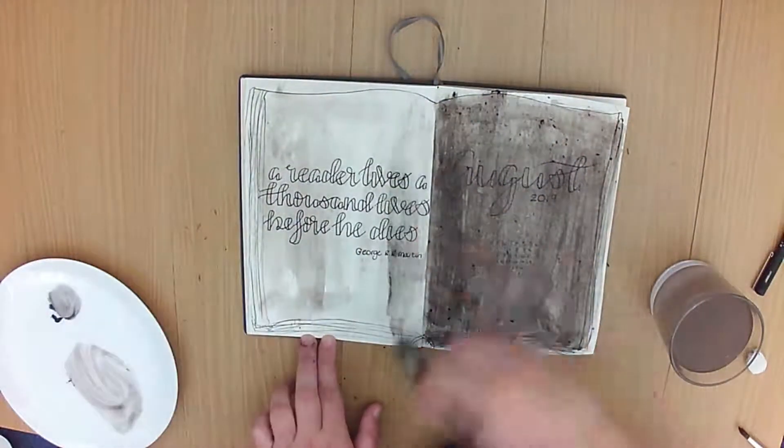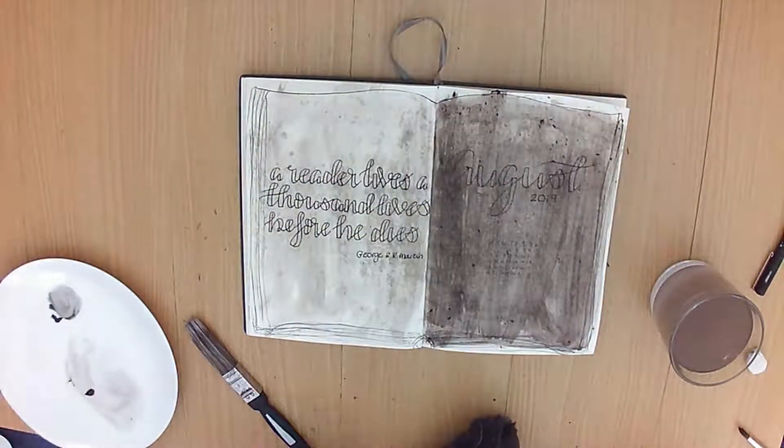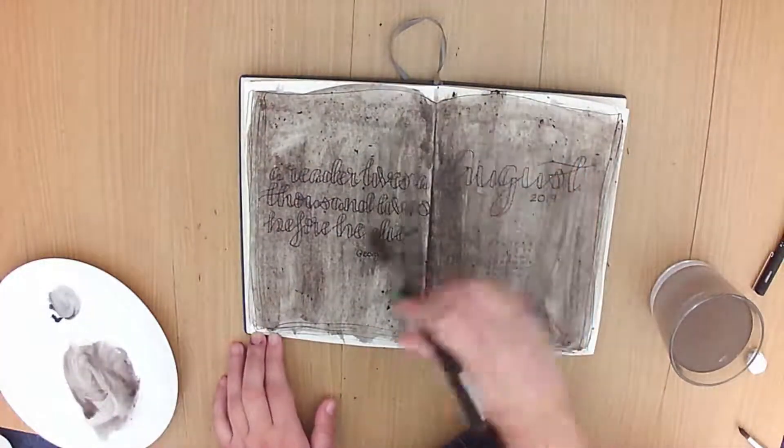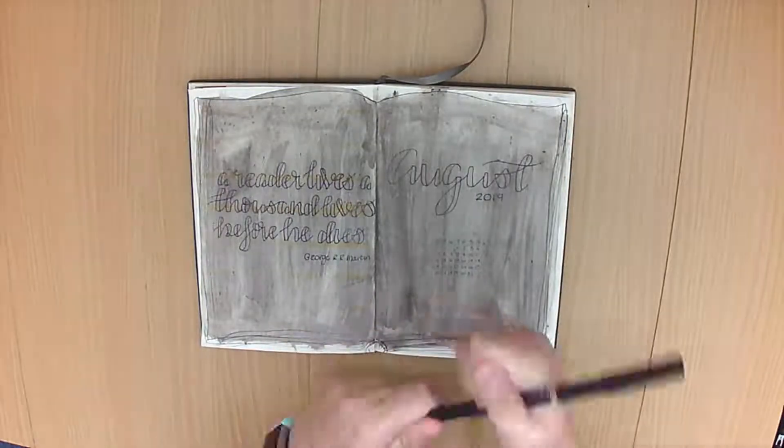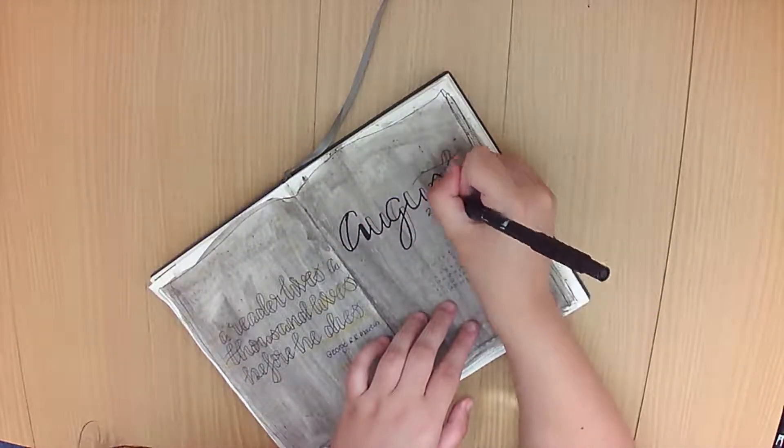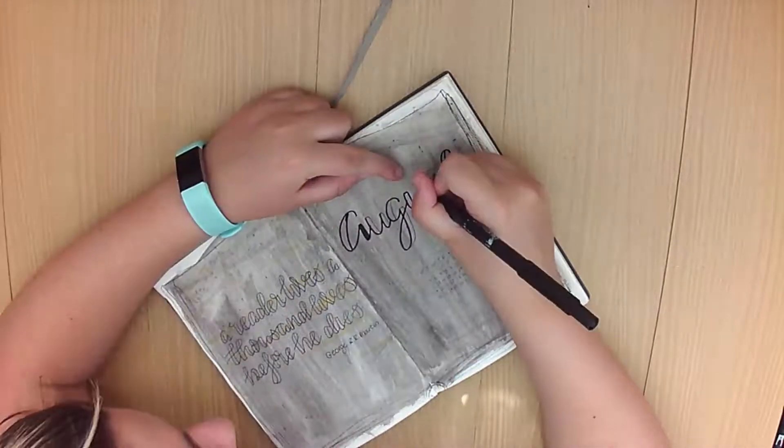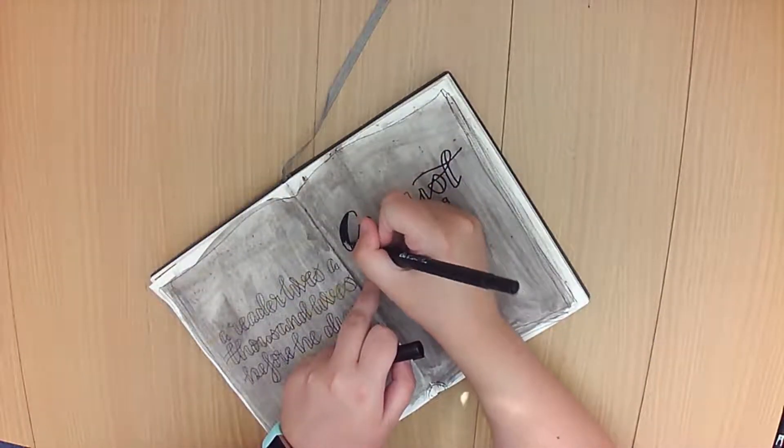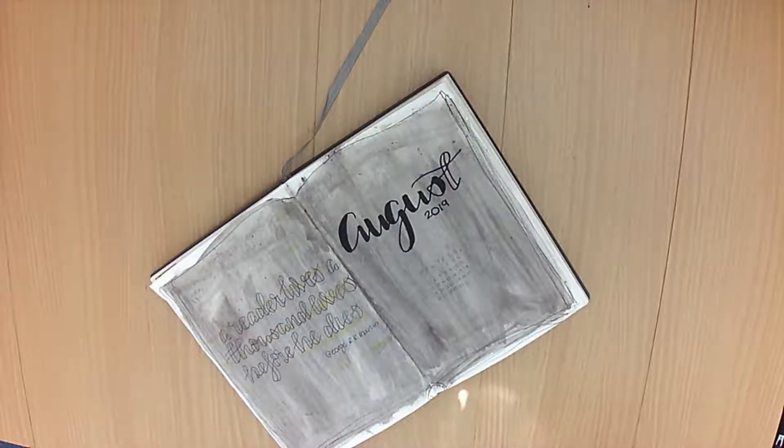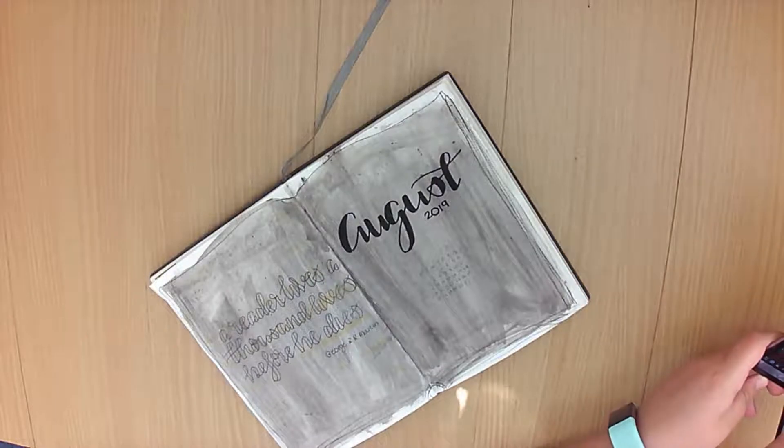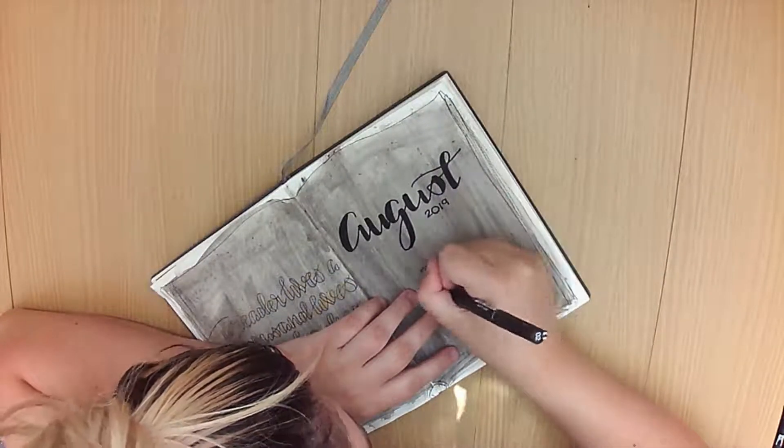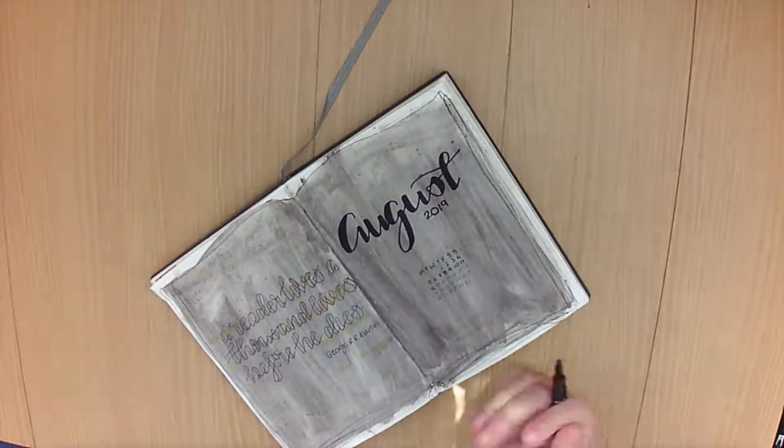I did do August on the floor of my sisters' bedroom, and this theme is books, which is heavily inspired by another YouTuber. Her name is Hello Alice, and I will link her down below. Go check it out, I think it's her November 2018 bullet journal.